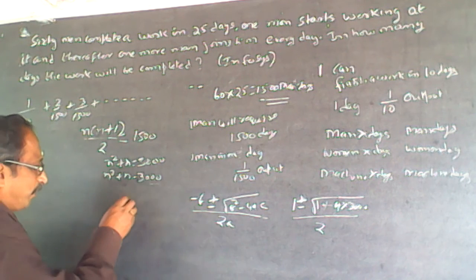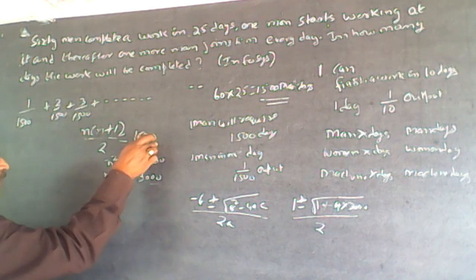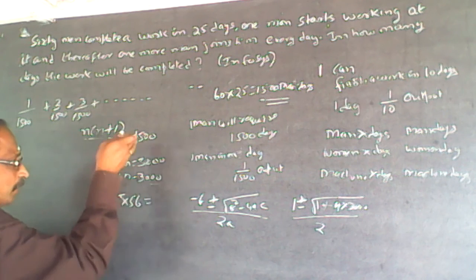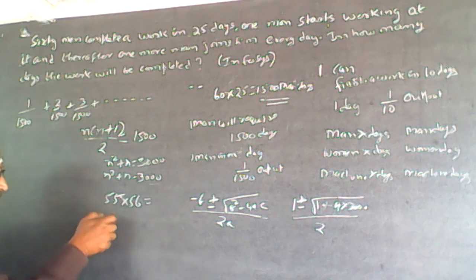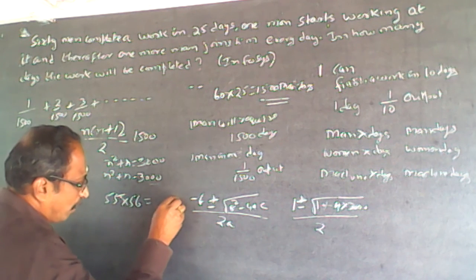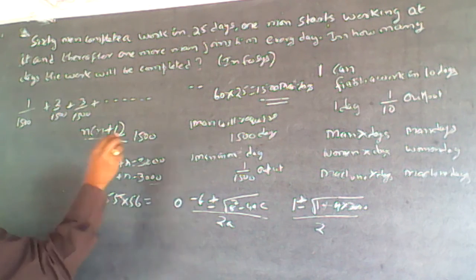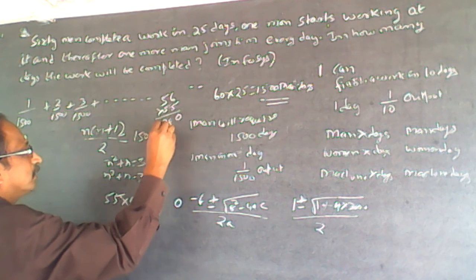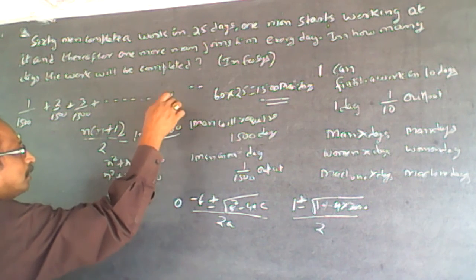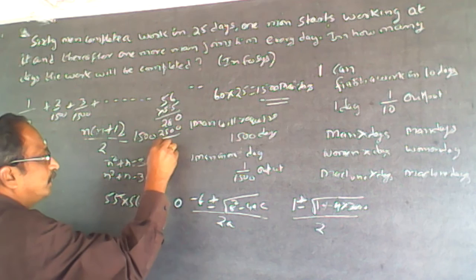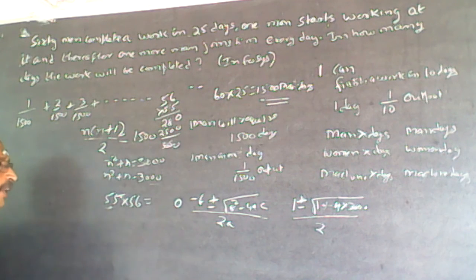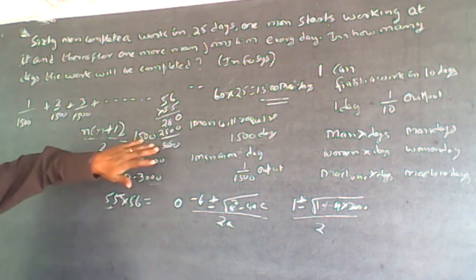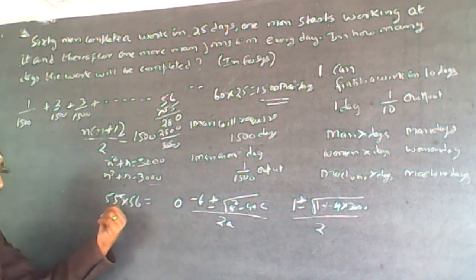Try n = 55: 55 × 56 = 3080. This exceeds 3000, so 55 days is too many. Since n(n+1) = 3080 is more than 3000, the work will be completed in less than 55 days, so check n = 54.